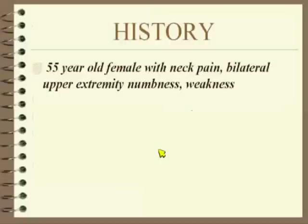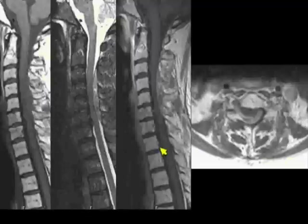Neck pain, bilateral upper extremity numbness and weakness. The images shown are T1 on the left, T2 in the middle, and post-contrast sagittal and post-contrast axial.